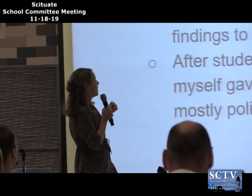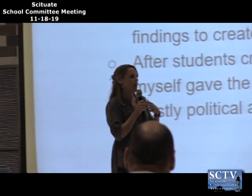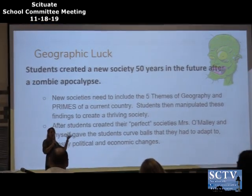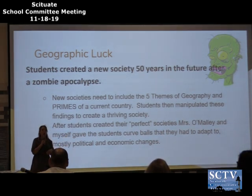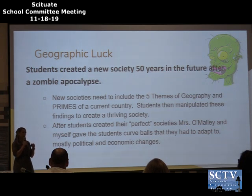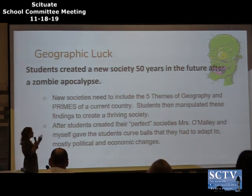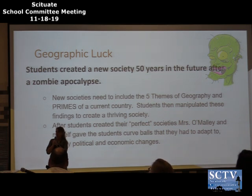Basically, students create new societies—the zombie part gets thrown in because they're building these societies fresh. They needed something to happen to move them out of Scituate and the New England area. We base it on Jared Diamond's theory that some areas of the world were luckier for societies to survive. Students pick out of a hat where they'll set up their new society from about eight regions—this group was in New Zealand and Australia.